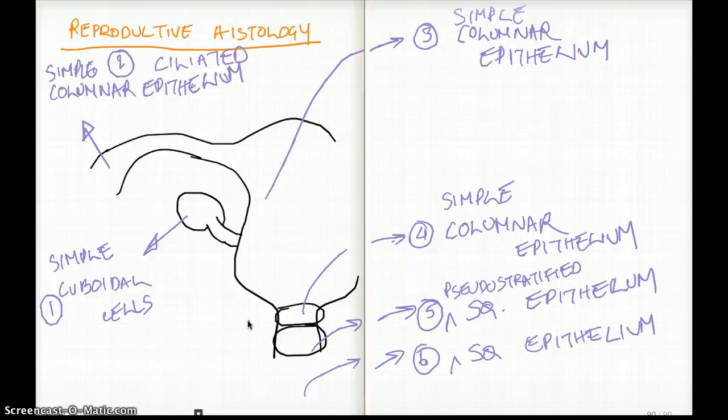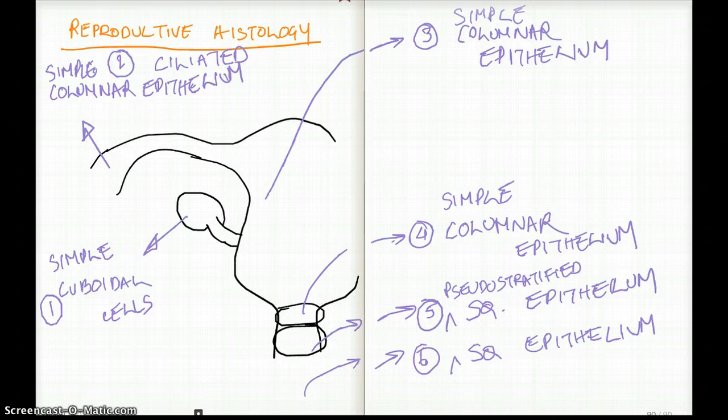Now, that was our reproductive histology. Here, I would like to talk about some other things which are not reproductive histology, just to bring some reference in here. Now, two other areas in the body where histology is heavily tested is esophagus and bronchus.